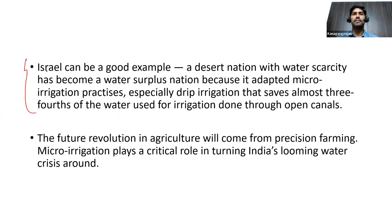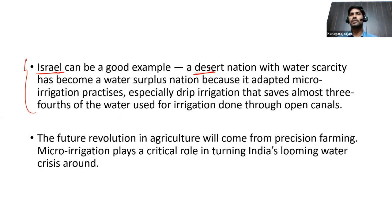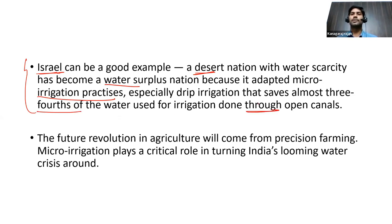A real case study example is Israel. This desert nation in the Middle East, which faced severe water scarcity, became a water-surplus nation by adopting micro irrigation practices — especially drip irrigation — saving almost three-fourths of the water previously used for open canals.